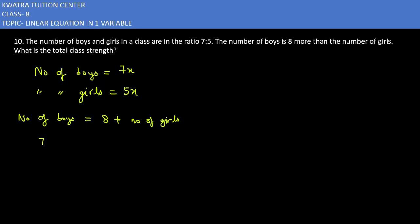Number of boys is 7x, and on the other side 8. Number of girls is 5x, and 5x will be on the left side of the line. What will happen? 7x will be reduced or minus, and 7x minus 5x will be equal to 2x.